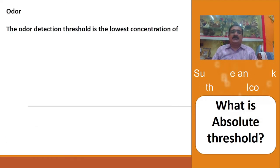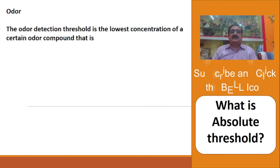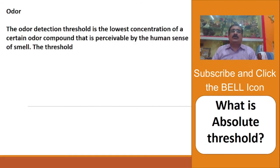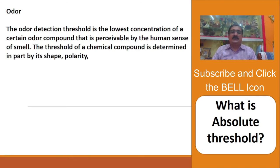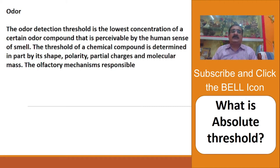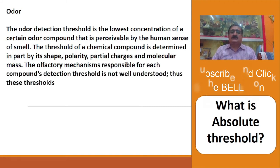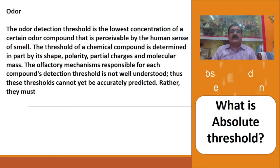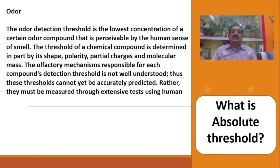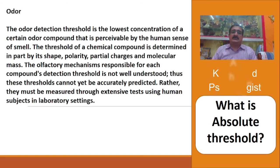In the case of odor, the detection threshold is the lowest concentration of a certain odor compound that is perceivable by the human sense of smell. The threshold of a chemical compound is determined in part by its shape, polarity, partial charges, and molecular mass. The olfactory mechanism responsible for each compound's detection threshold is not well understood, so these thresholds cannot yet be accurately predicted and must be measured through extensive tests using human subjects in laboratory settings.